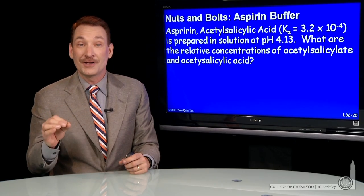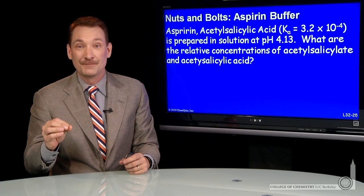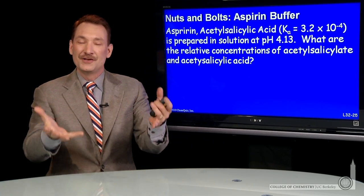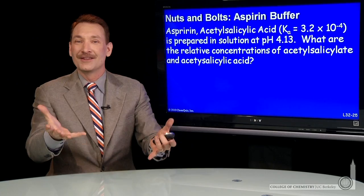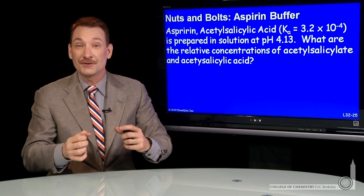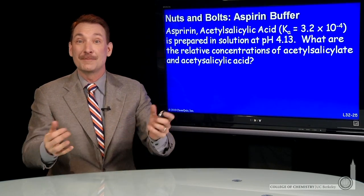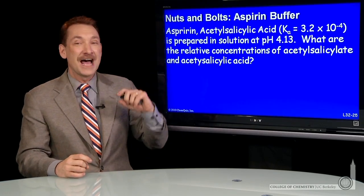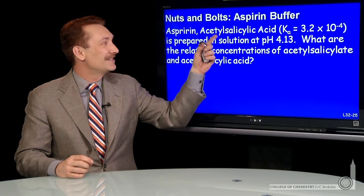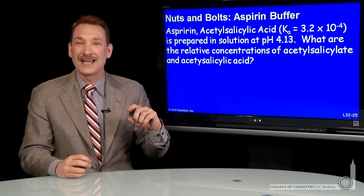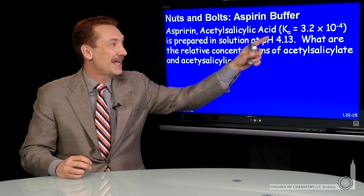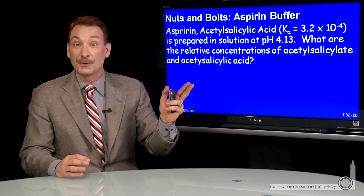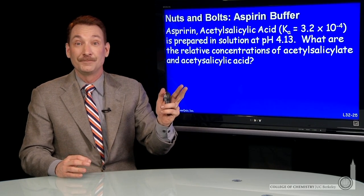Let's do a calculation involving a weak acid, its pKa, and determining the relative concentrations of the acid and base form. Aspirin, acetylsalicylic acid, has a Ka of 3.2 times 10 to the minus 4 — a typical weak acid.